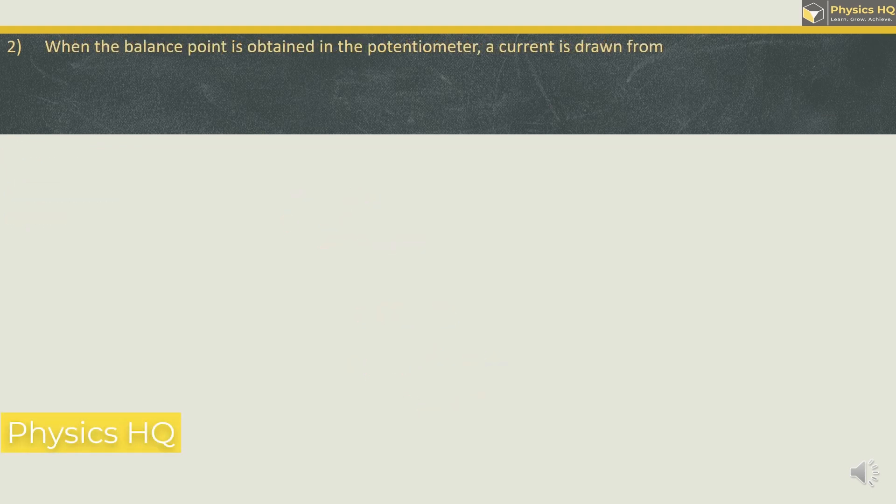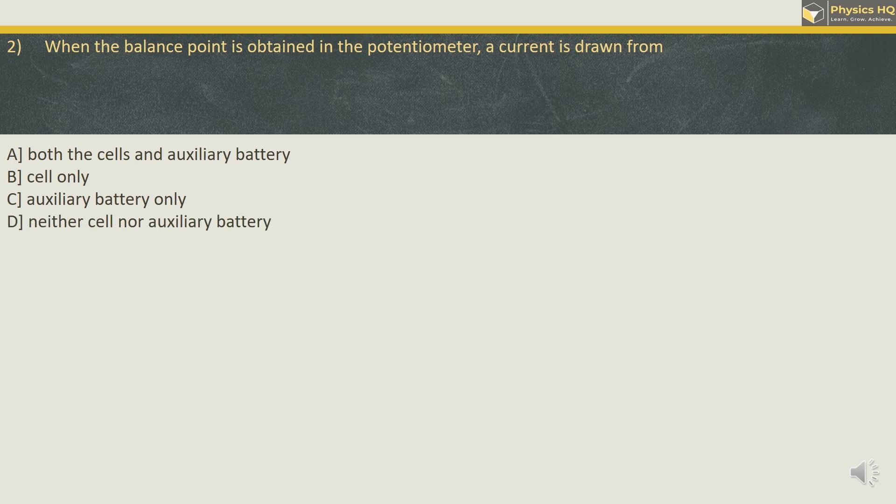When the balance point is obtained in the potentiometer, current is drawn from both the cells and auxiliary battery, cell only, auxiliary battery only, or neither cell nor auxiliary battery. So for this let us consider a potentiometer which is having a battery of EMF E, and this is the potentiometer wire over here.